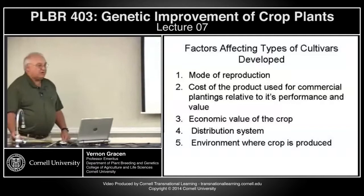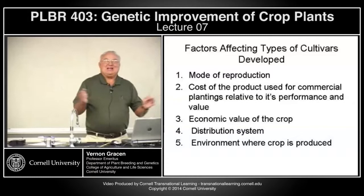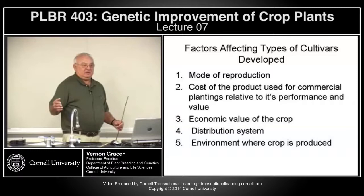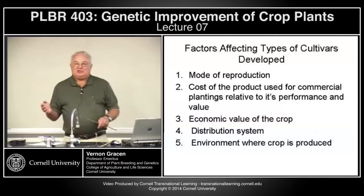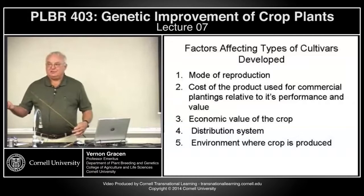If you're dealing with a highly uniform environment with few disease or insect problems and mechanically harvested agriculture, more uniformity is better. If you're dealing with subsistence farming where your variety will be intercropped with other crops or mixed with different varieties of the same crop, then uniformity is not that important. But stability and reproducibility remain very, very important.